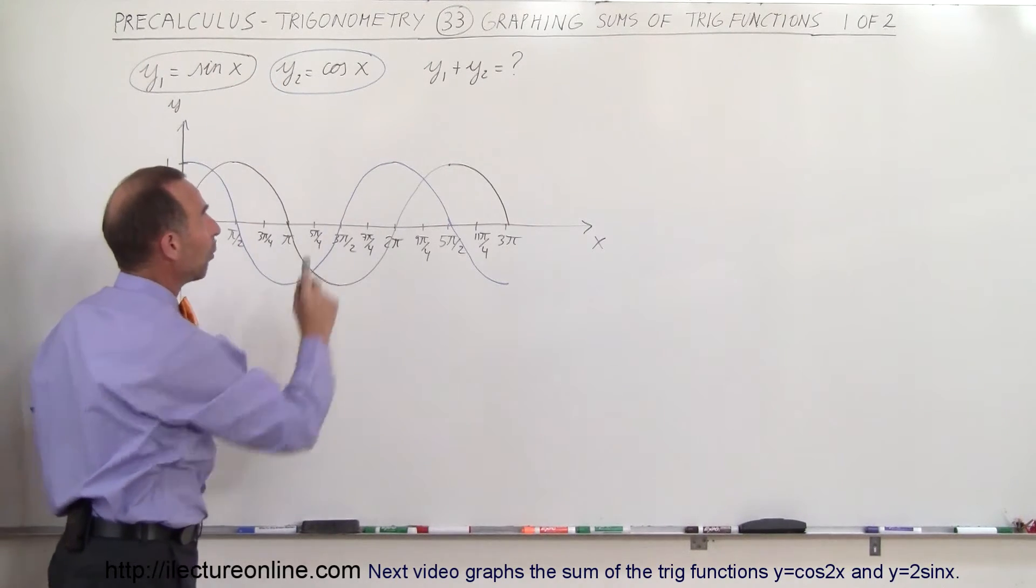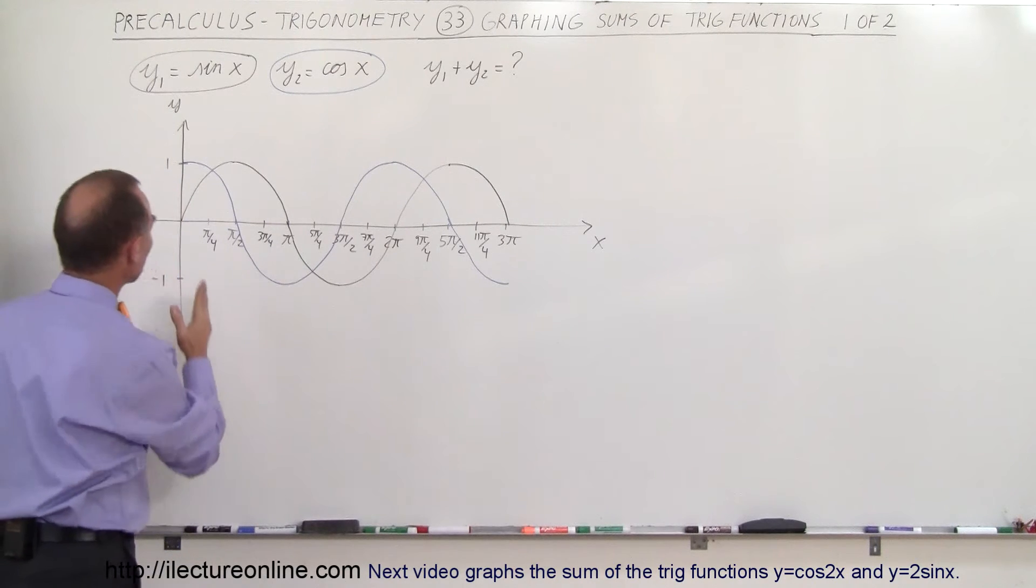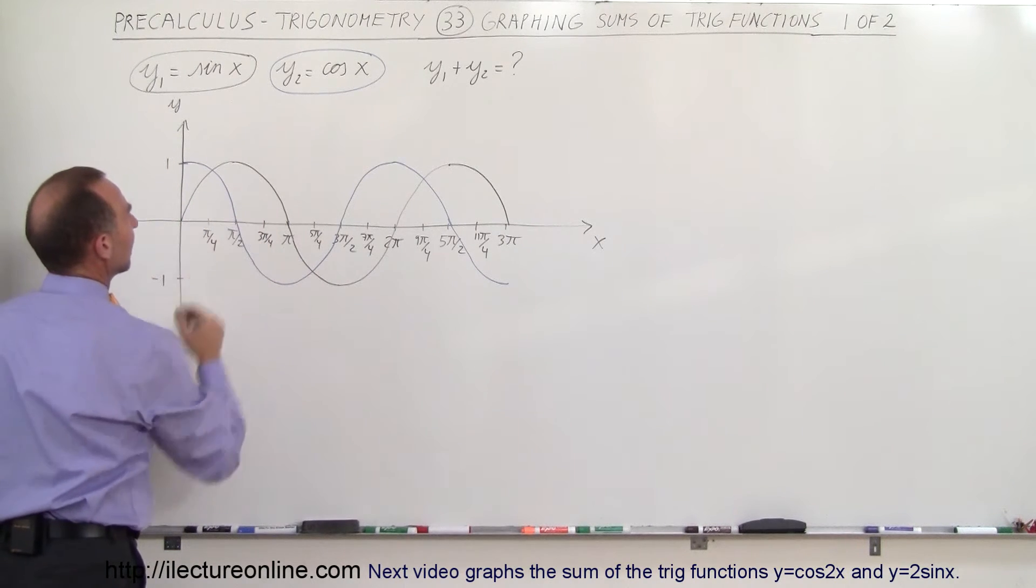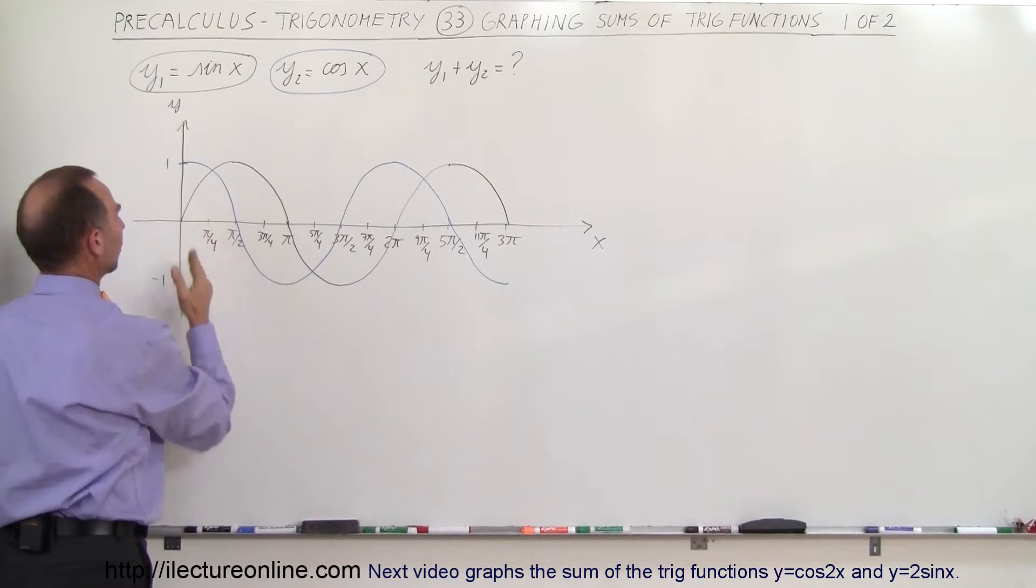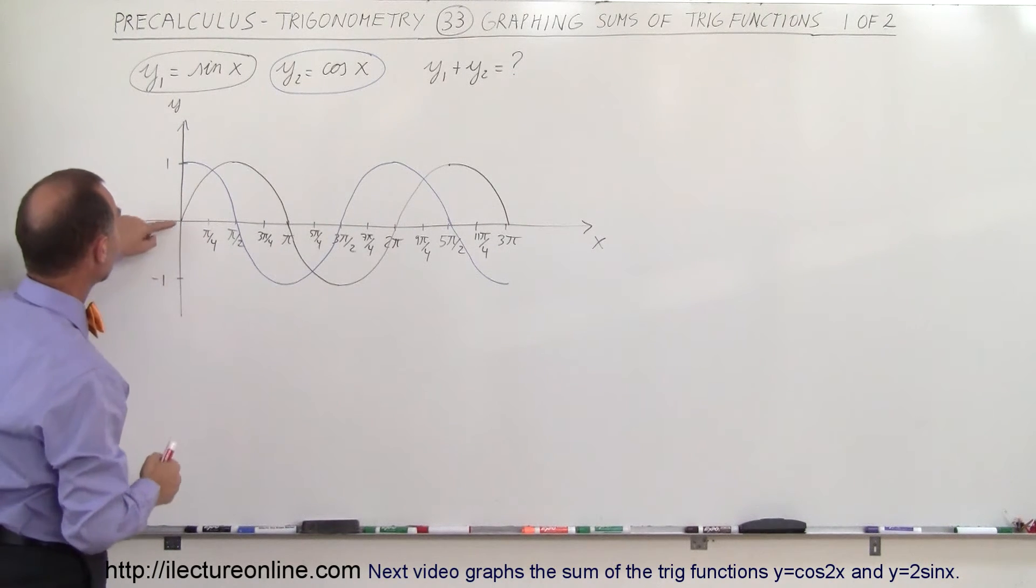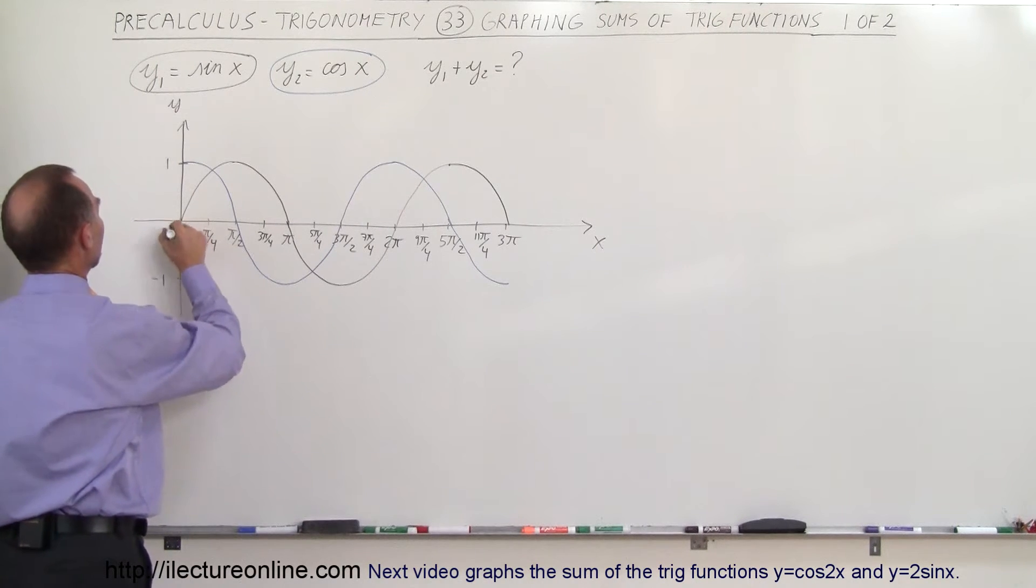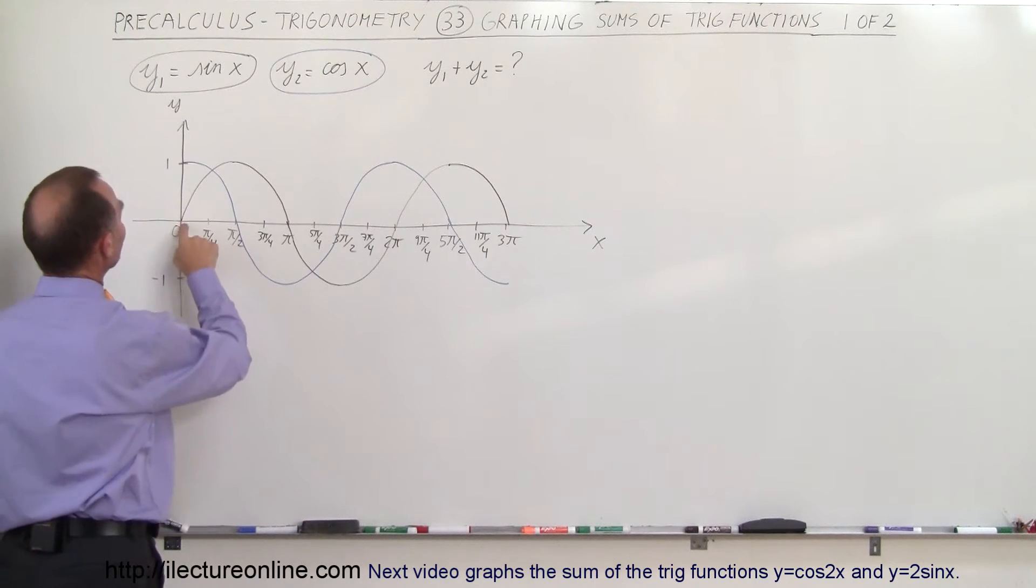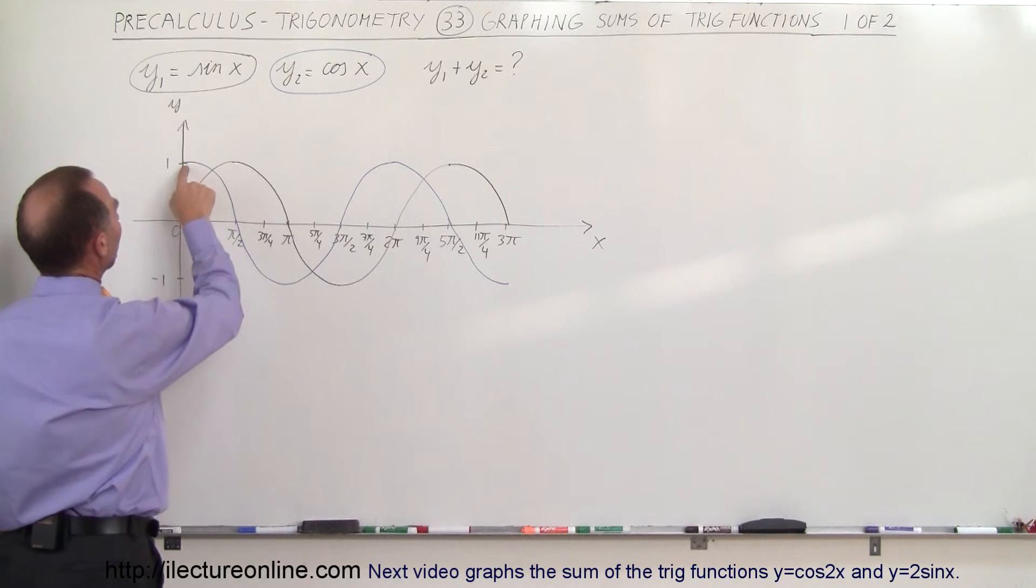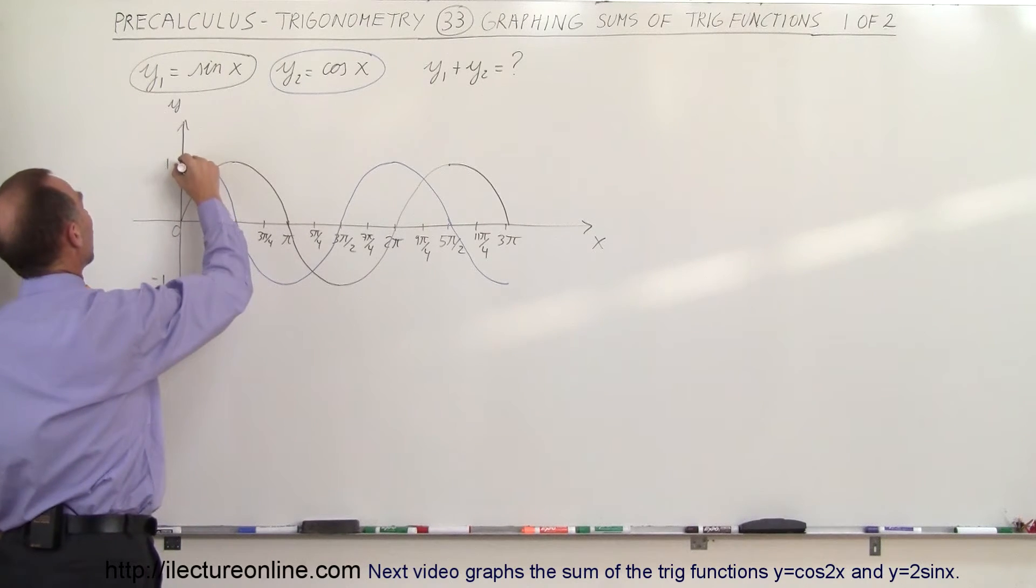Now we're going to sum them up. y1 plus y2 equals question mark. What does that look like? We can go to each section or each quarter pi, so to speak, on the angle and see what the sum of the two would be. In this case, when the angle is equal to 0, when x is equal to 0, notice that the sine of the angle is equal to 0 and the cosine is equal to 1. So when we add up 1 plus 0, we get 1.